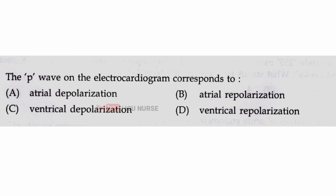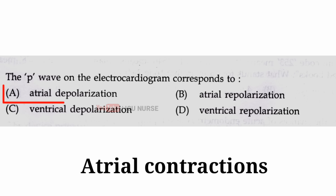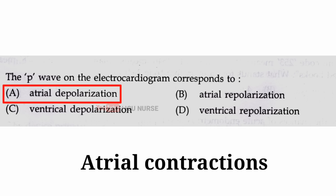The P wave on the electrocardiogram corresponds to — the correct answer is A — atrial depolarization.